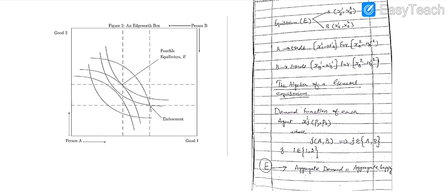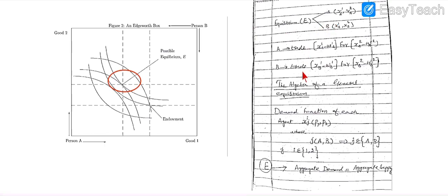Recalling the previous concept, here was the equilibrium in the Edgeworth box. The equilibrium point is where the indifference curve of person A and the indifference curve of person B are tangent to each other. This was the previous concept — how we relate this equilibrium with algebra and find the solution of this equilibrium point.